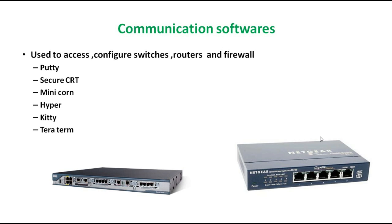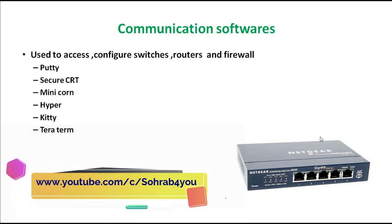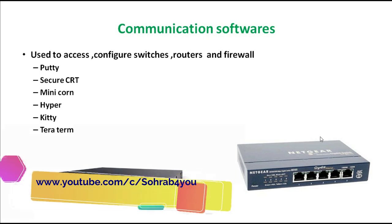Suppose we have computers with an operating system, and we have switches and routers with IOS — the Internetwork Operating System. There should be a software which connects the IOS to the OS. The software connecting IOS to OS is called communication software. Communication software is used to access or configure a switch, router, or firewall.